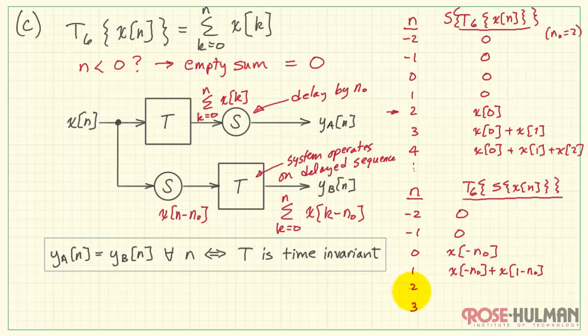All right, as we continue it along, n is 2. So we add in a third value, and so forth. Now, again, I'm doing this specifically just to picture it with n_0 equals 2, but it applies really for any value of n_0.